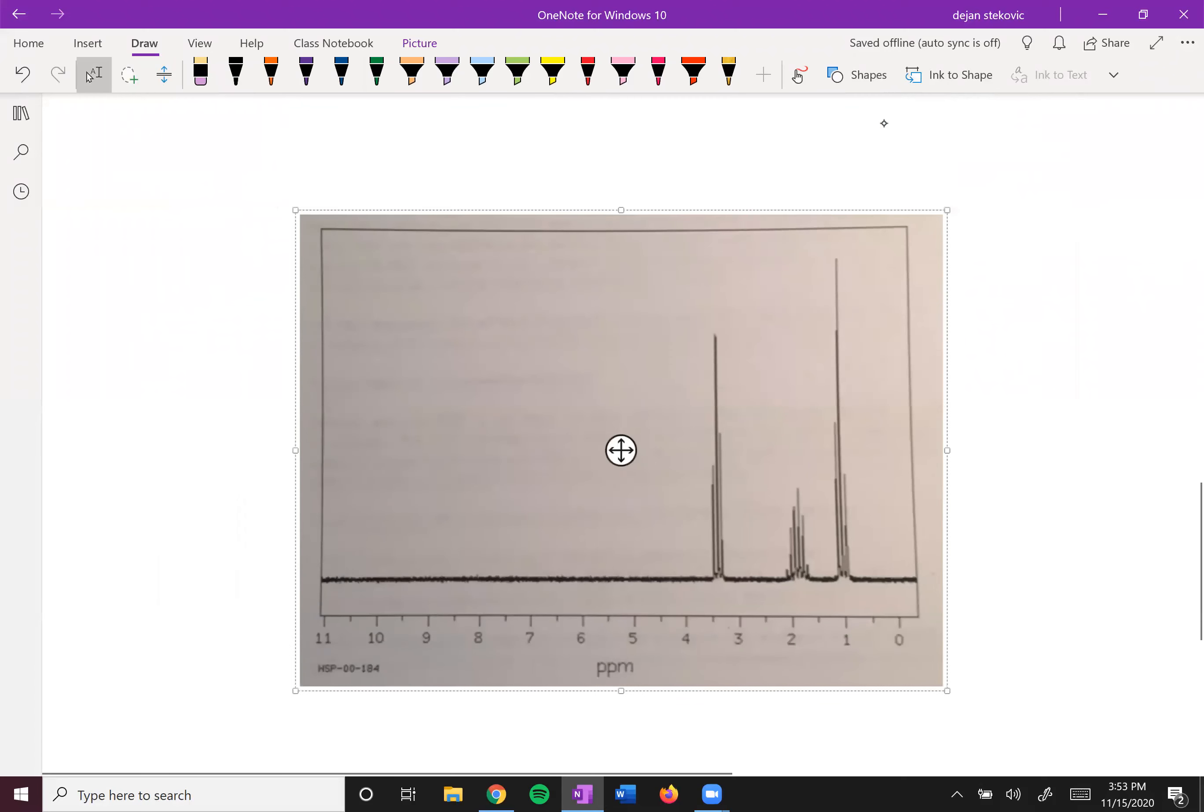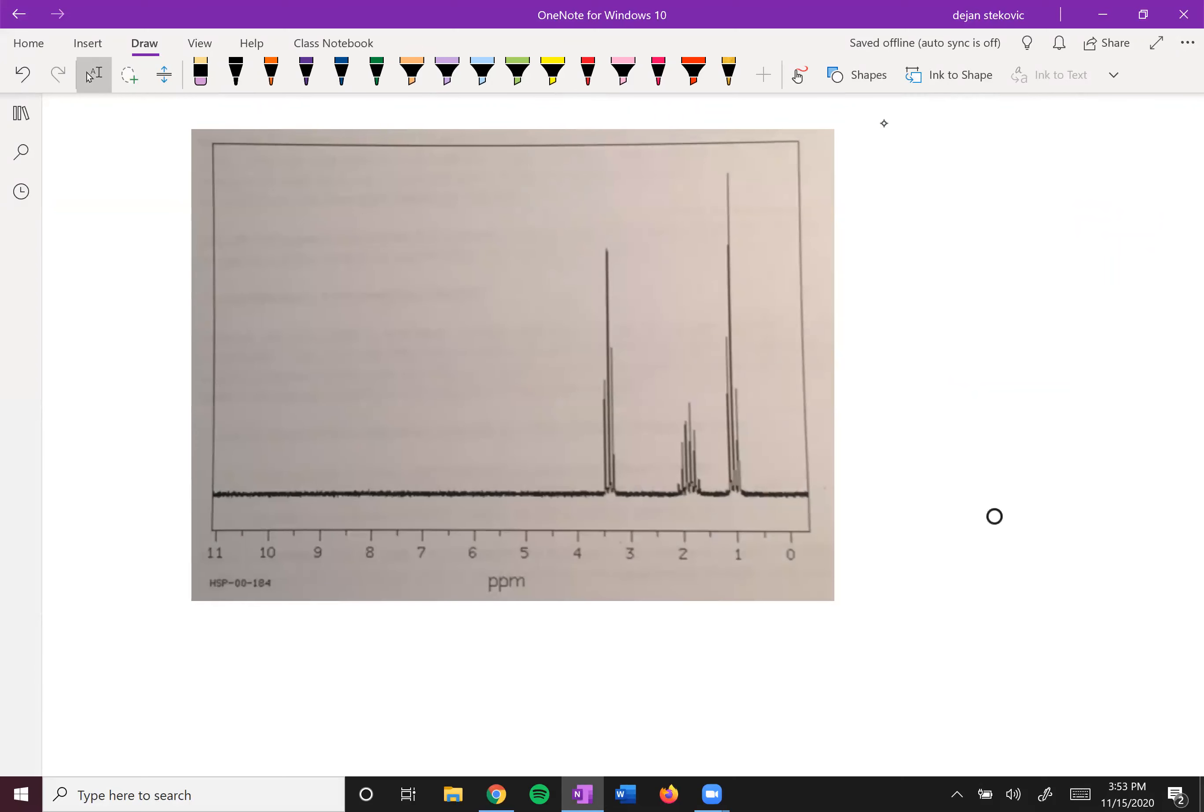So here's just a picture of an NMR spectra. Again, you see zero starts on the right. In this case, they only go up to 11. And then you have peaks.